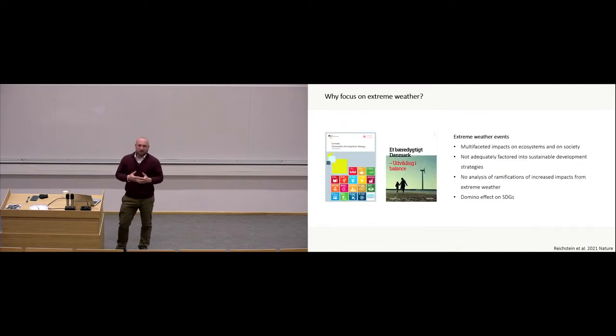There are more and more arguments that are being put forth that extreme weather events are not being included in sustainable development strategies. So we see that a lot of countries are adopting the sustainable development goals, for instance. But there's hardly any mention, if you look into these, about the impact of extreme weather. In particular, there's no analysis of its ramifications of increased events. And people are suggesting, and scientists are suggesting in particular, that this could have a domino effect on the sustainable development goals, because these are simply not being accounted for.